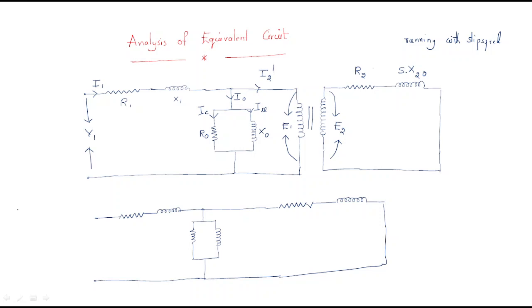For that purpose, we will shift the rotor resistance into the primary side. For example, if we divide by s, this is also sE2-naught — dividing by s gives R2/s and it will become E2-naught generally. So we will shift and finally R2/s becomes R2-dash/s, and X2-naught becomes X2-naught-dash.